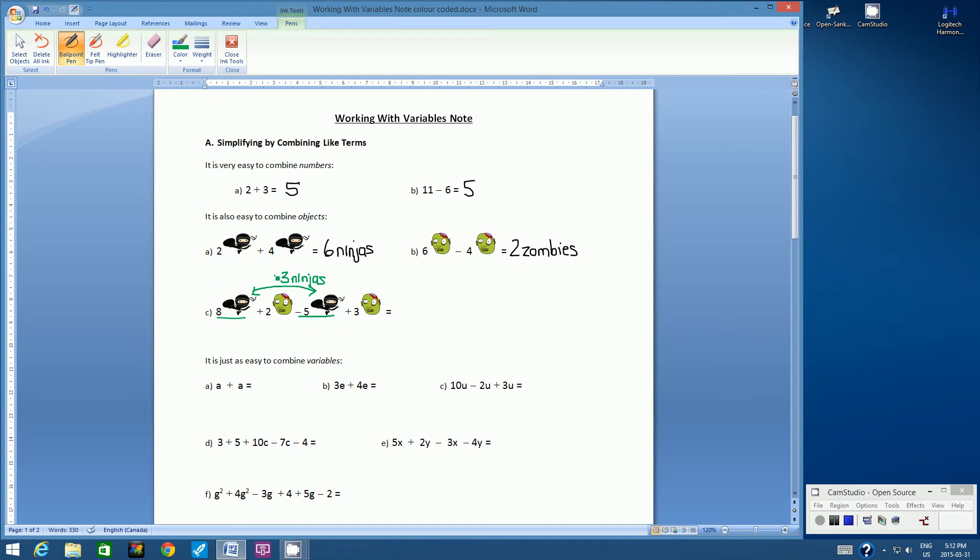8 ninjas subtract 5 ninjas is 3 ninjas. And that's, of course, positive 3 ninjas. And then if I look at the other term, I've got positive 2 zombies plus 3 zombies. So if I were to group these two like terms together, positive 2 zombies plus 3 zombies is positive 5 zombies.